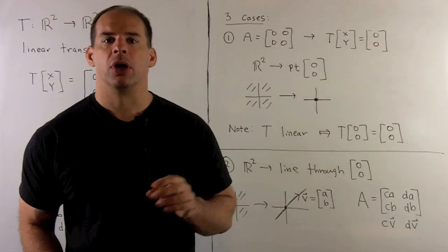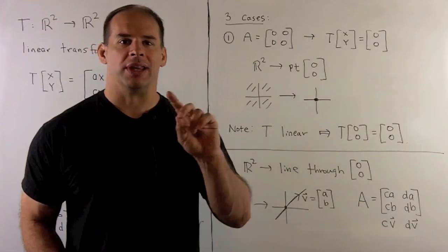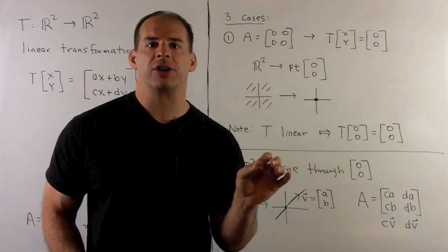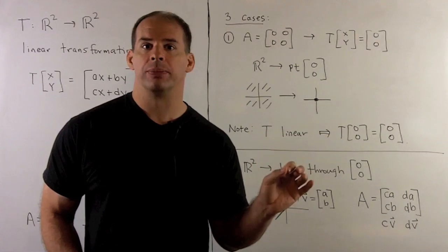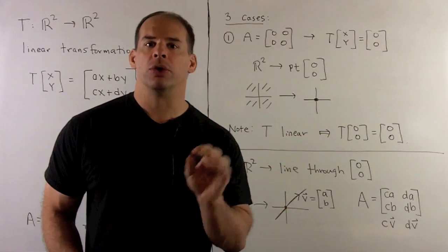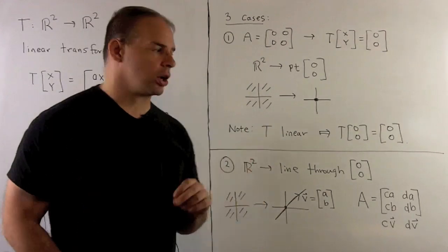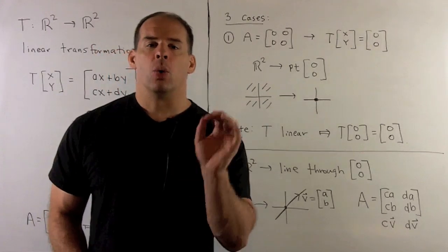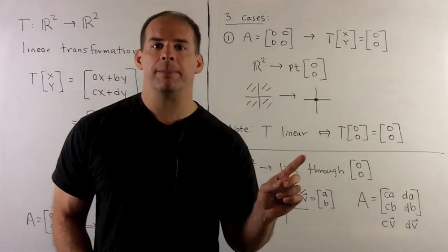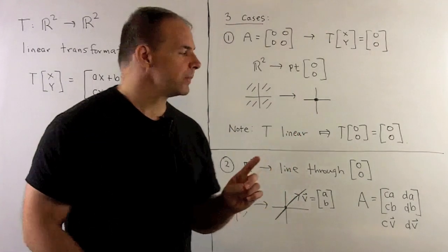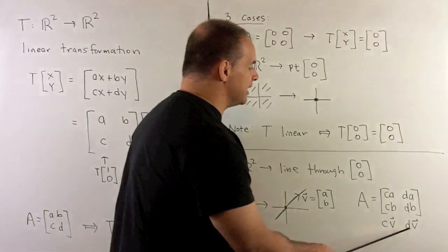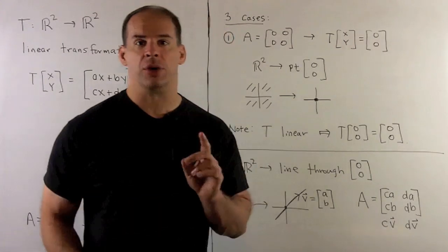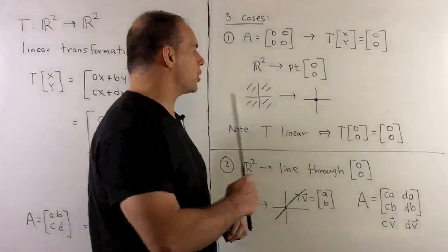In the second case, R2 is carried to a line. Because T carries the zero vector to the zero vector, R2 is carried to a line through the origin. We choose a vector AB in our line; then (1,0) is carried to a multiple C of AB, and (0,1) is carried to a multiple D of AB. The only restriction is that C and D are not both equal to zero at the same time, otherwise we get the first case.